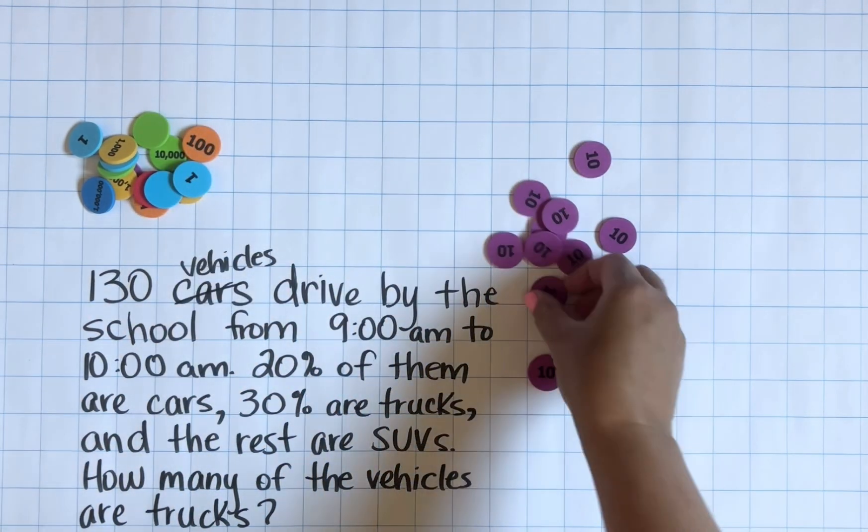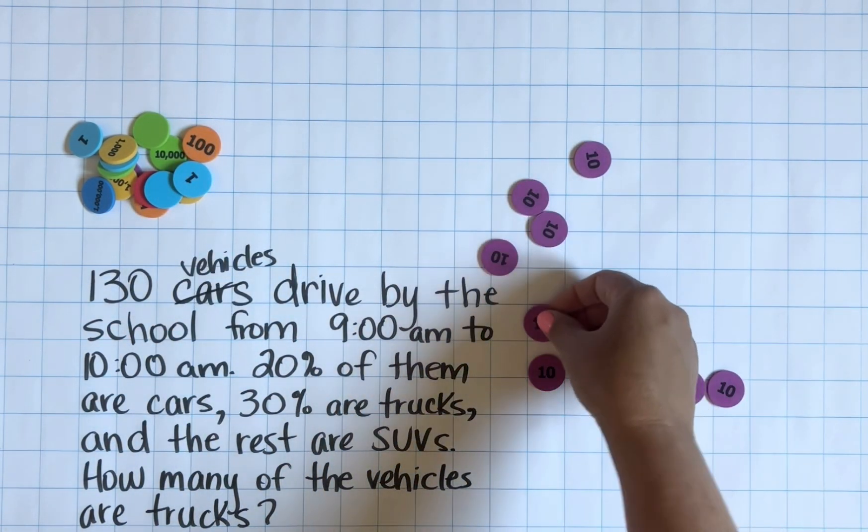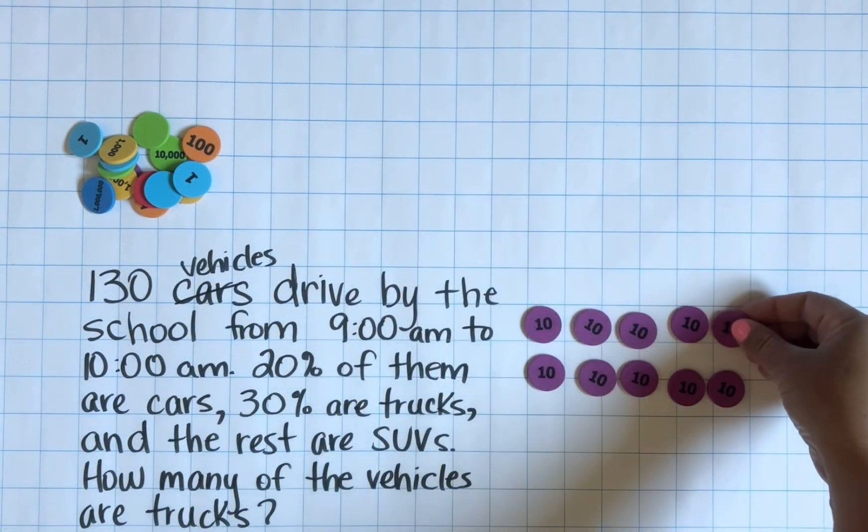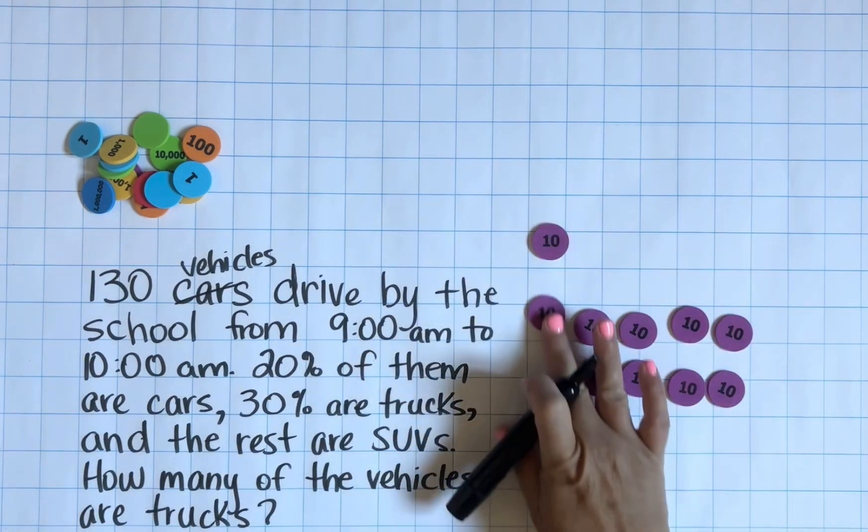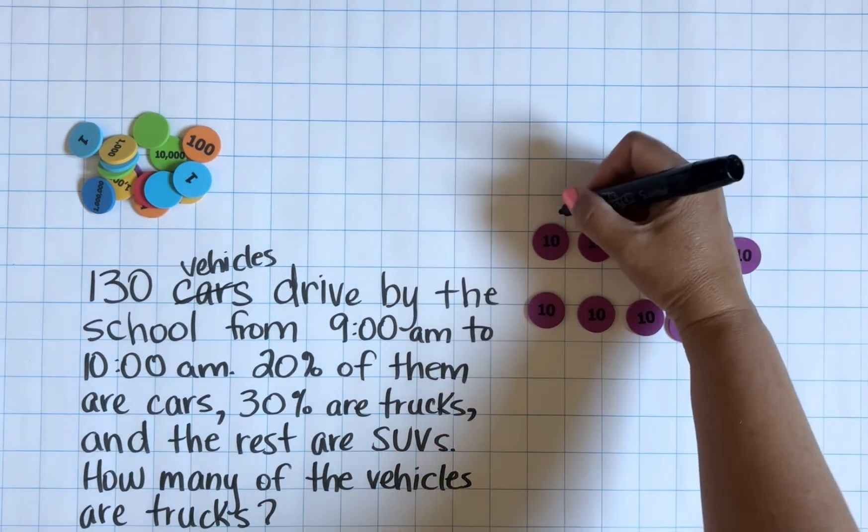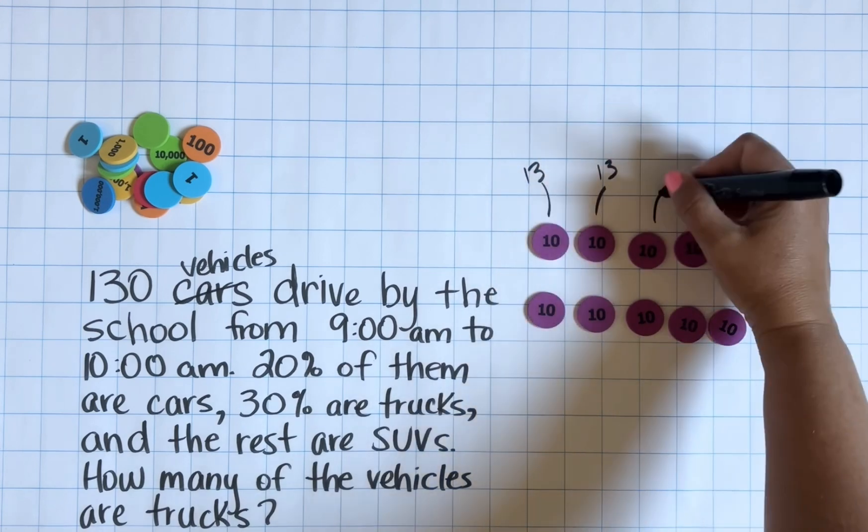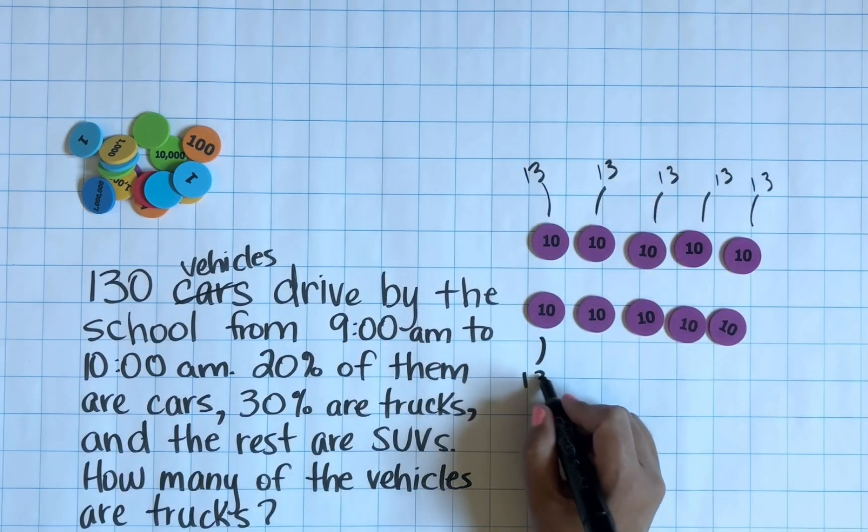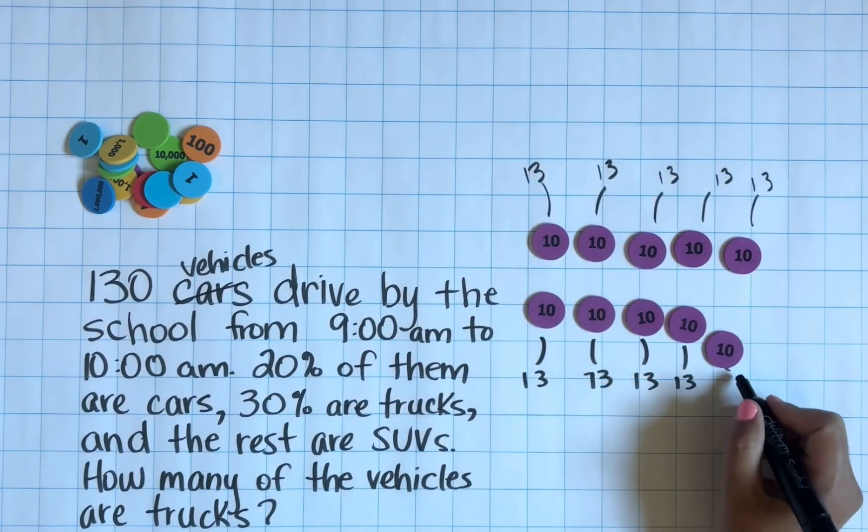We know that it takes 10 tens to make 100%, so I'm going to take 10 place value disks that each represent 10% of the vehicles. Through a little bit of division we can figure out that each group of 10% is 13 vehicles.